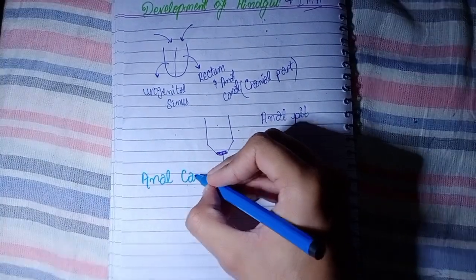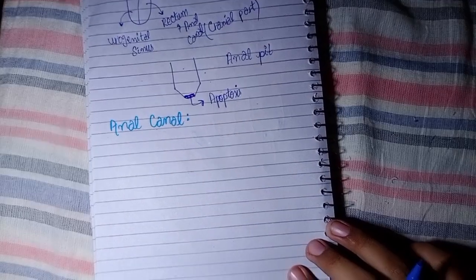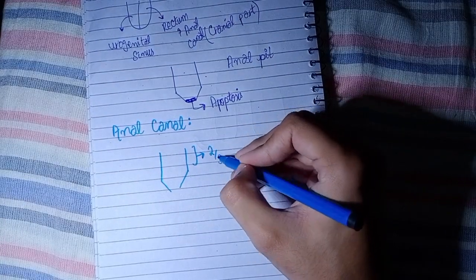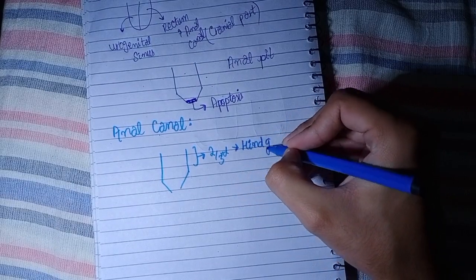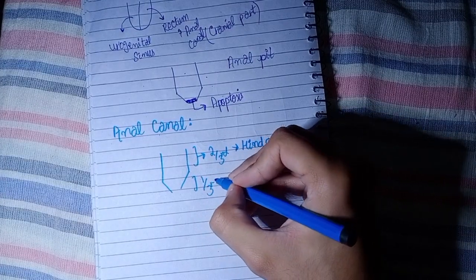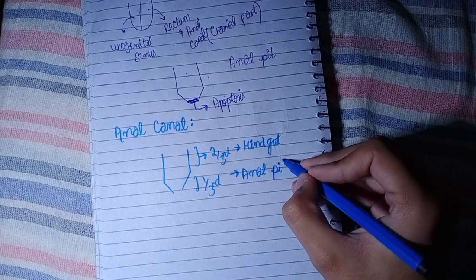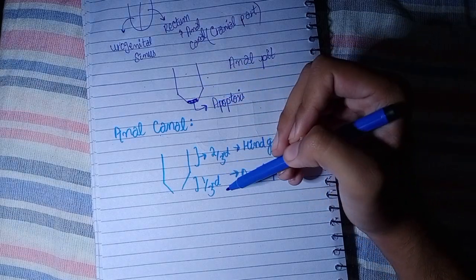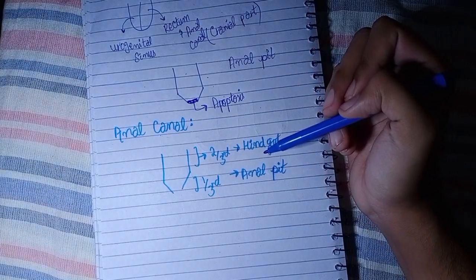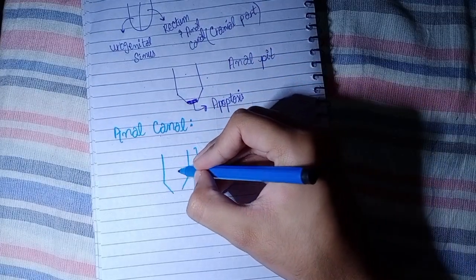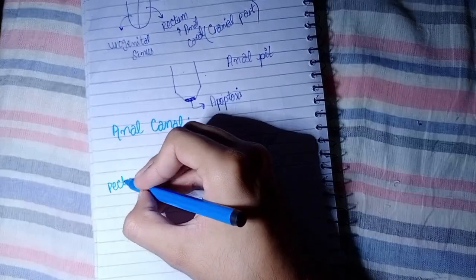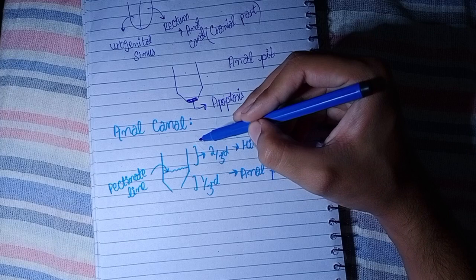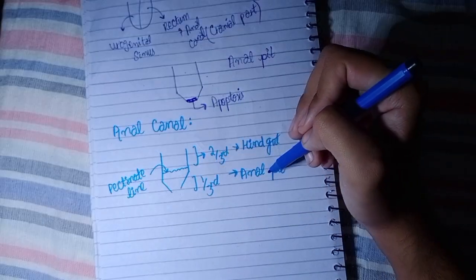Now let's talk about the development of the anal canal. The superior two-thirds of the adult anal canal is derived from the hindgut. The inferior one-third is derived from the anal pit. The anal pit is the ectodermally derived invagination. These two portions are separated by a line which we call the pectinate line.